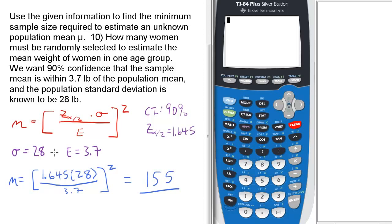The little sigma is 28, the e, the error, is 3.7, meaning the 3.7 plus or minus pounds.